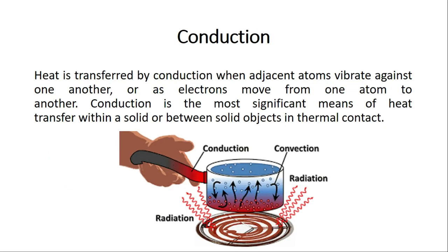Heat is transferred by conduction when adjacent atoms vibrate against each other or as electrons move from one atom to another. Conduction is the most significant means of heat transfer within a solid or between solid objects in thermal contact. For example, when a pan is heated from the bottom, the handle also becomes hot due to vibration of atoms or movement of electrons. This is a perfect example of conduction.